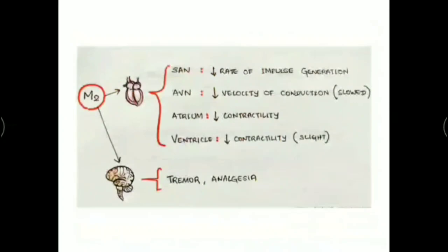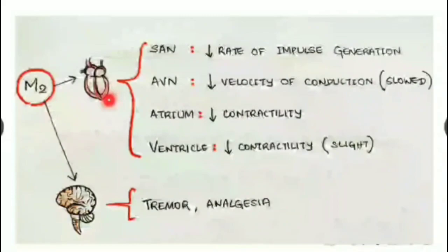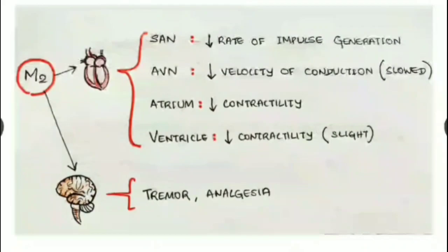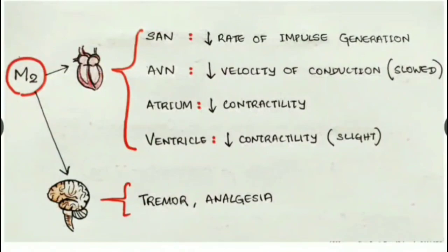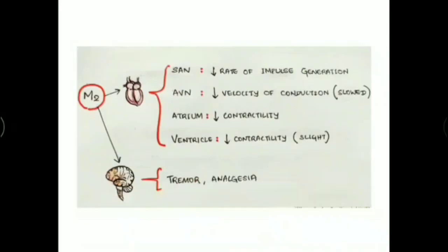M2 receptors are located chiefly at the heart and also at the CNS. In the heart, stimulating the SA node causes decreased rate of impulse generation. Its action at the AV node causes reduced velocity of conduction. Its action at the atrium causes reduced contractility, and similarly in the ventricle contractility is slightly decreased. In the CNS, M2 causes tremor and analgesia.